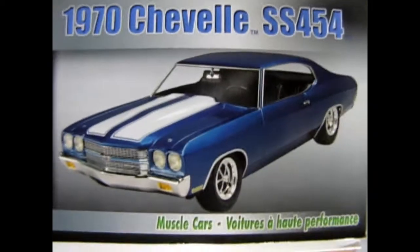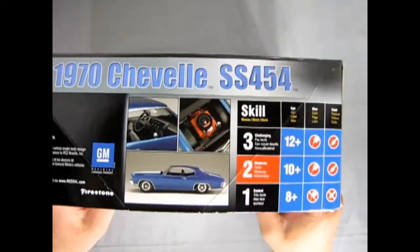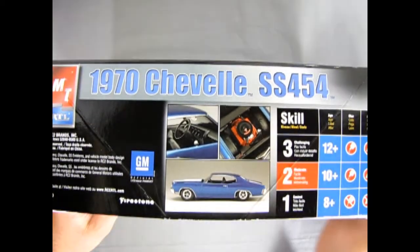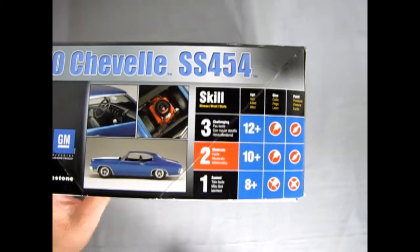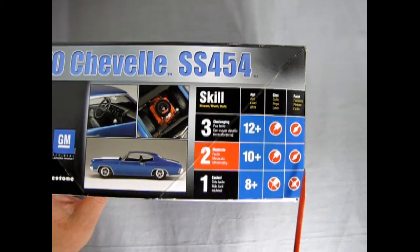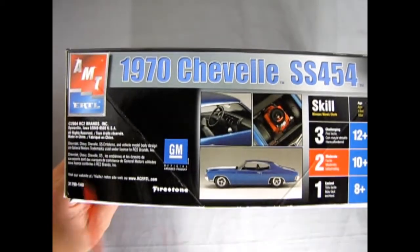Just zoom back out so we can turn our box up on edge and here of course we have the same pictures but now we can see that this is a skill level 2 kit for ages 10 and up, requires glue and paint, and licensed by GM. This edition originally came out in 2004.